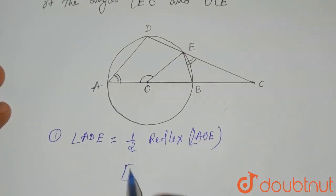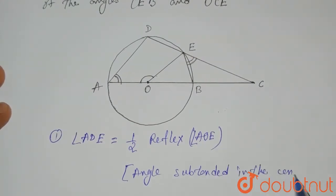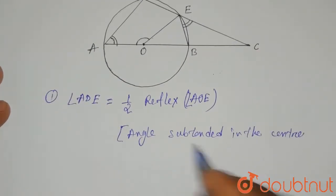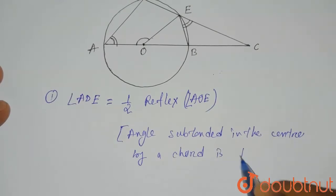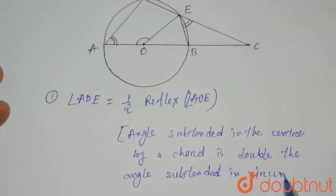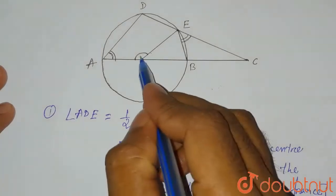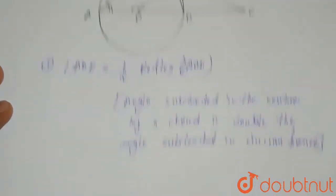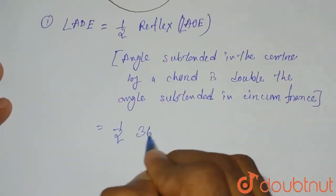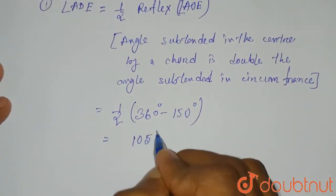We apply the theorem that the angle subtended at the center by a chord is double the angle subtended at the circumference. So angle ADE equals half of reflex angle AOE, which is half of (360° − 150°) = half of 210°, which equals 105 degrees.